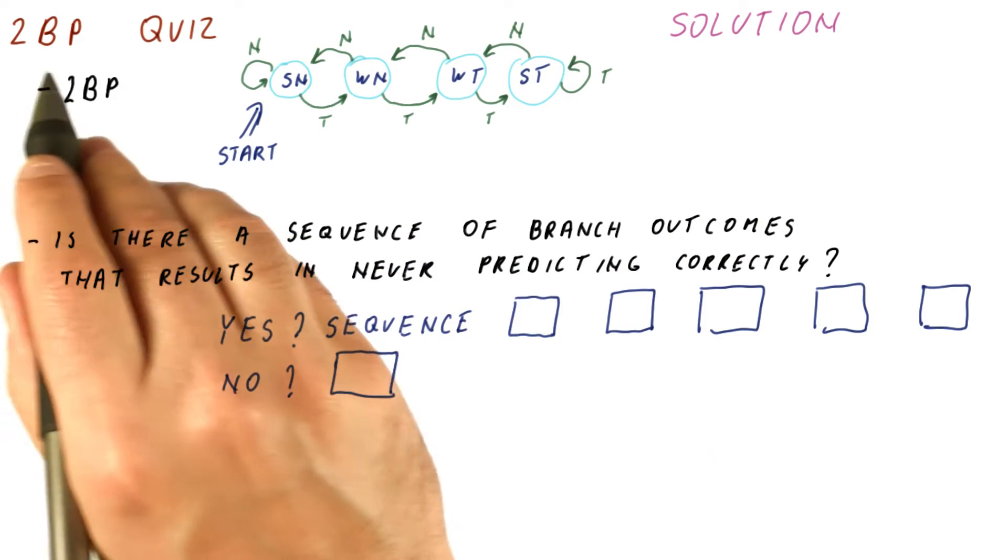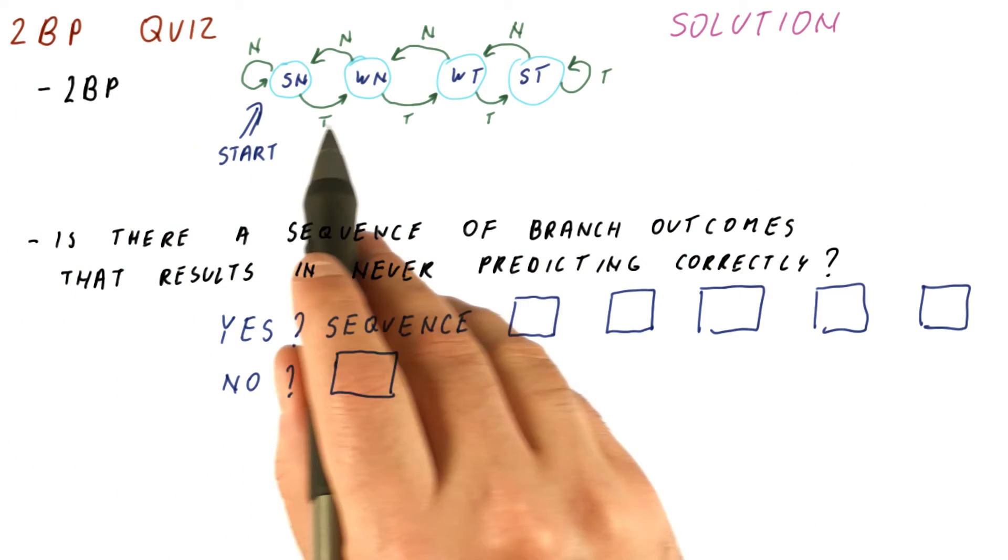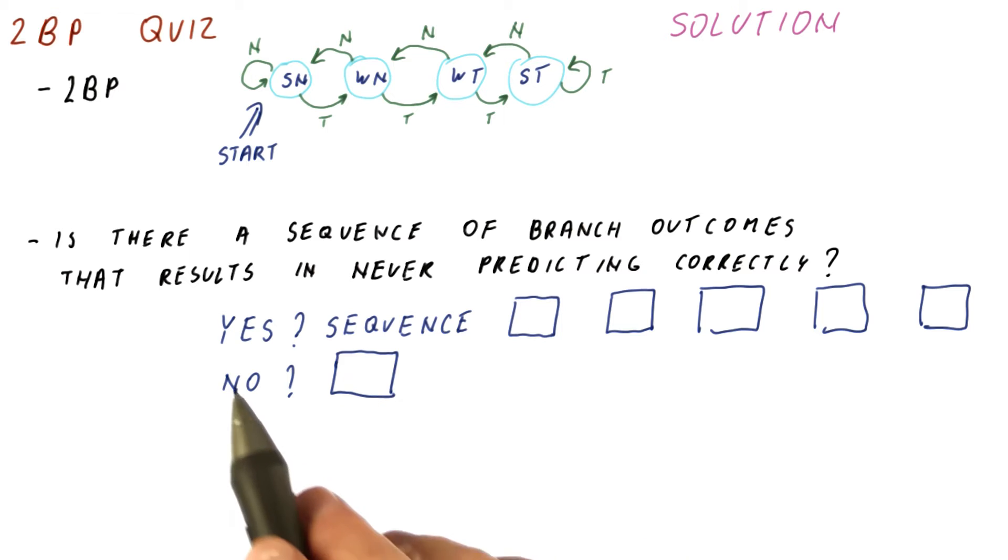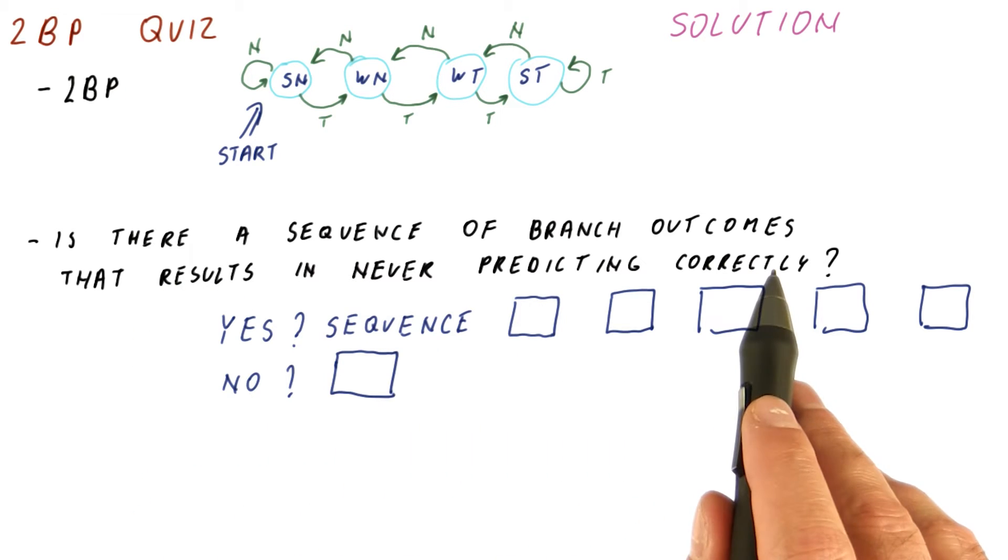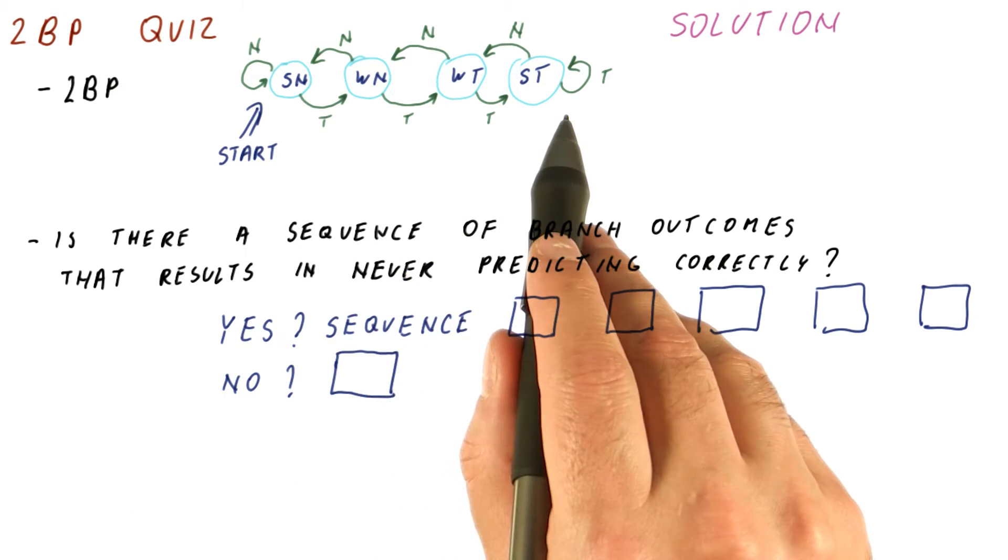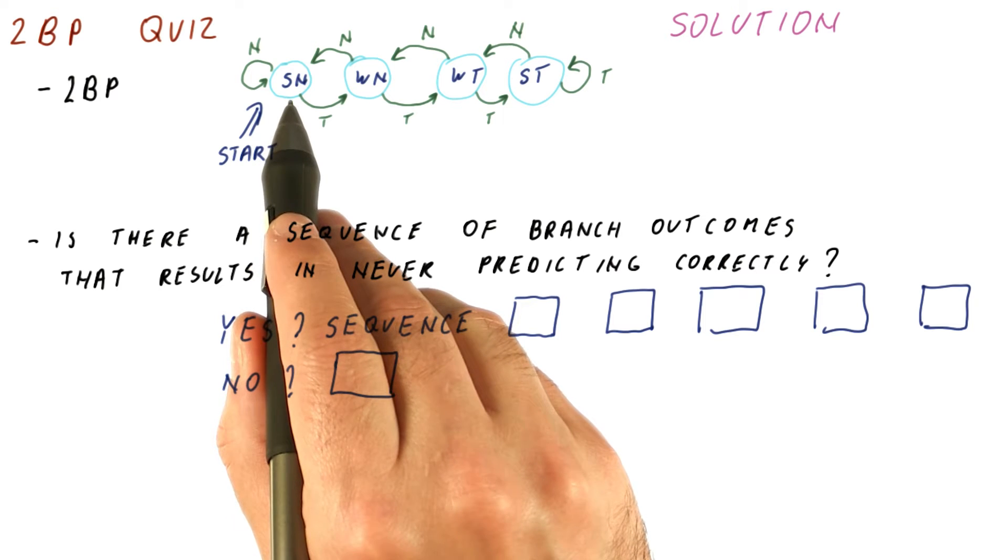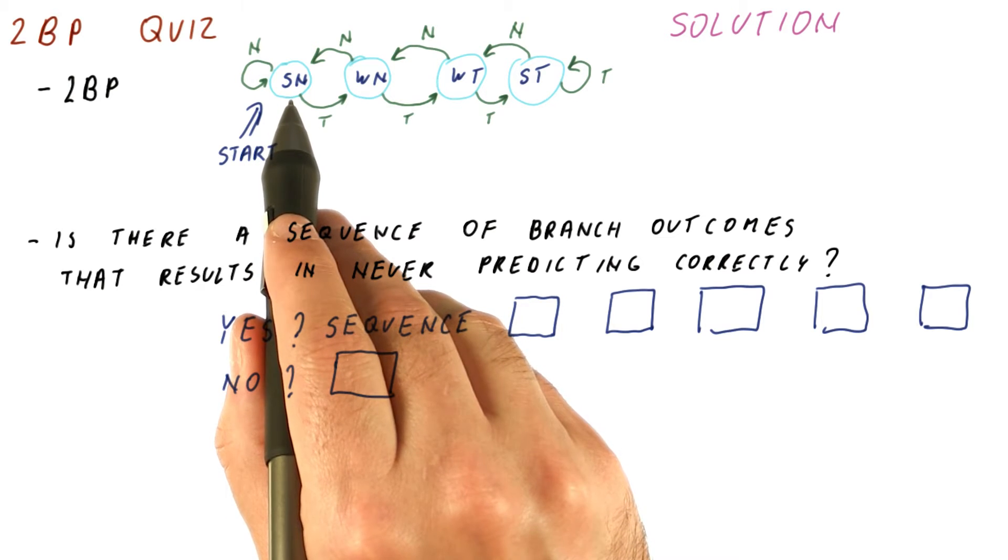Now let's discuss the solution to our two-bit predictor quiz. We have a two-bit predictor like this. The question is, is there a sequence of branch outcomes such that this predictor, starting in the strong not taken state, always mispredicts?